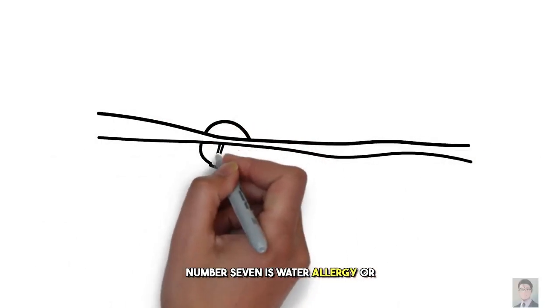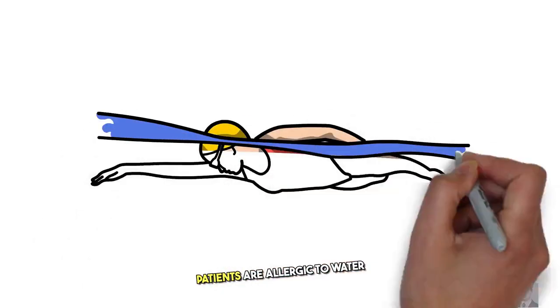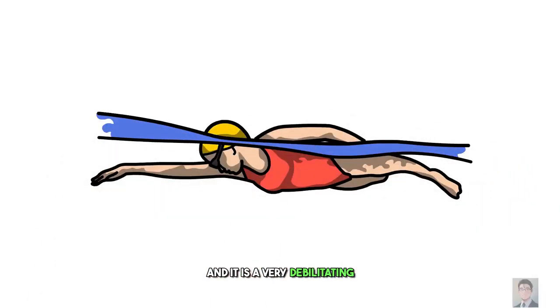Number 7 is water allergy, or aquagenic urticaria. This is, as the name suggests, patients are allergic to water, and it is a very debilitating condition as you can imagine. Here's a video of what it looks like.